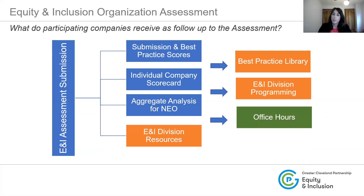Companies who participate in our assessment receive follow-up after submission. As soon as you submit, your organization can save your answers and receive immediate best practice results showing how you're scoring both by category and overall. Companies also receive an individual scorecard to see their results on the diversity piece and the best practice piece, benchmarked against the aggregate as a whole — how the entire region answered these questions and how their specific industry performed. We also provide a full aggregate analysis for the region as a whole, which is a report available on our website.